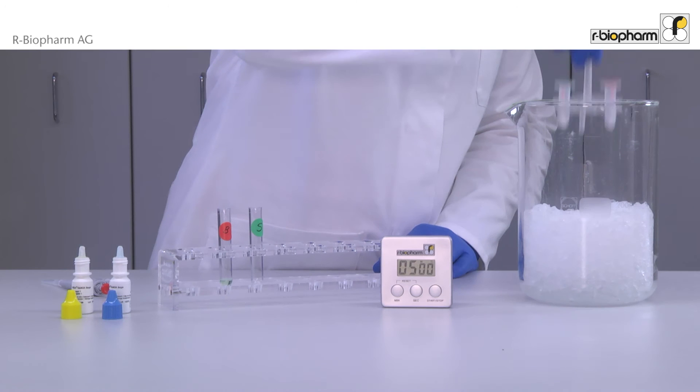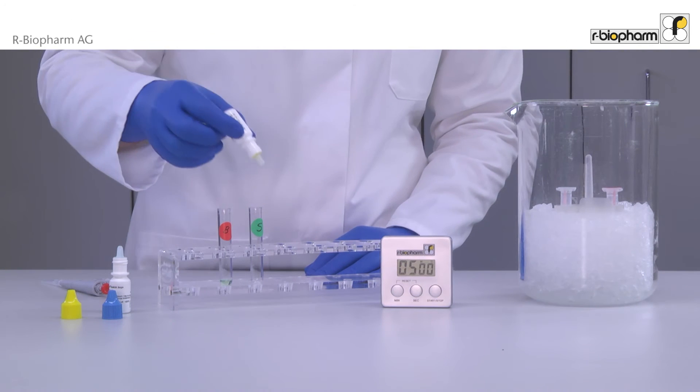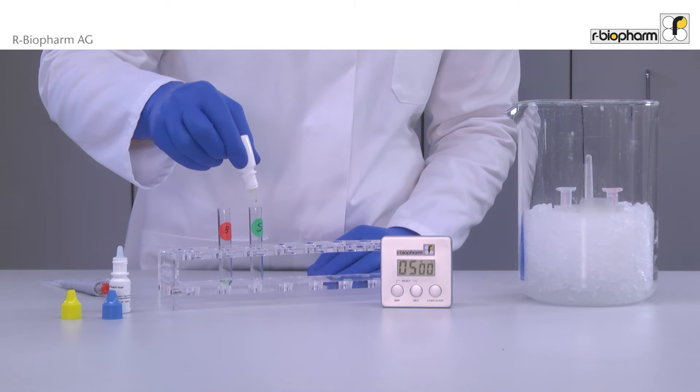The vials are cooled down to 25 degrees Celsius. Then five drops of each conjugate are added to new five milliliter tubes.